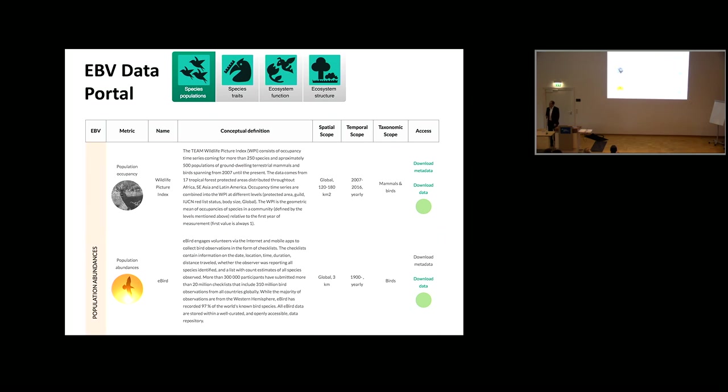We'll also be launching this week the EBV data portal. This comes from many requests about whether GeoBON can take the EBV concept and produce useful outputs the community can use. In the portal right now, four of the six classes are represented, with global and regional datasets available to download — metadata and data on things like species population, occupancy, abundance, and so on.